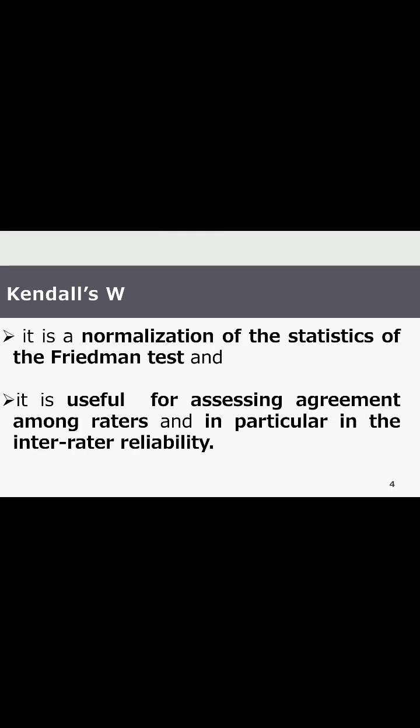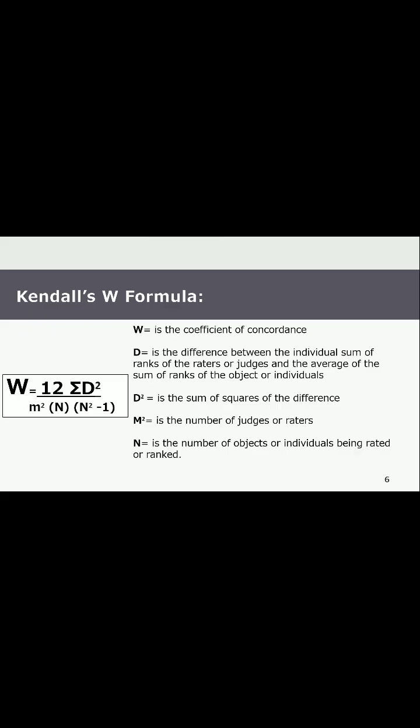Kendall's W is a normalization of the statistics of the Friedman test and it is useful for assessing agreement among raters and in particular in the inter-rater reliability. Kendall's coefficient of concordance formula is W equals 12 summation of D squared over M squared times N times N squared minus 1.